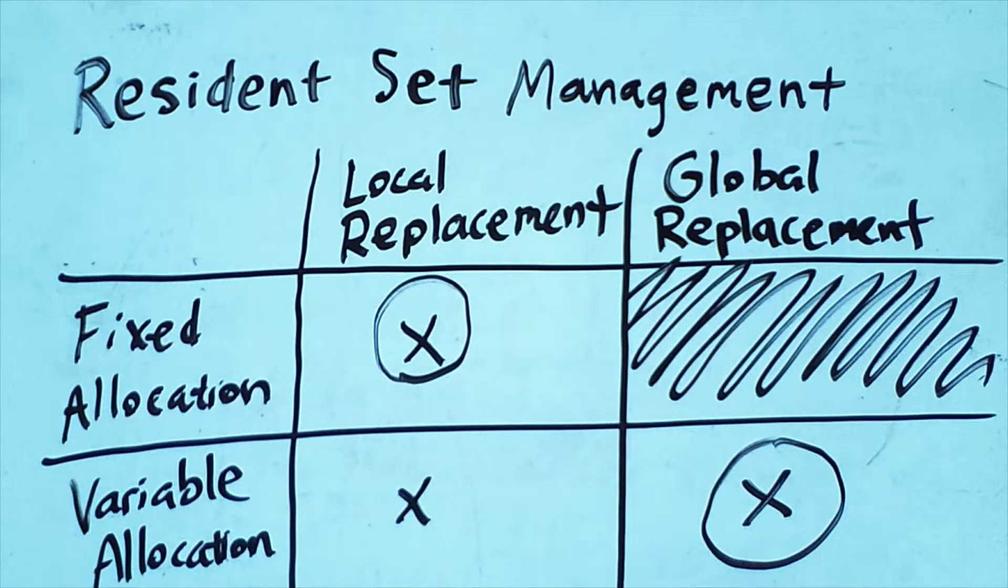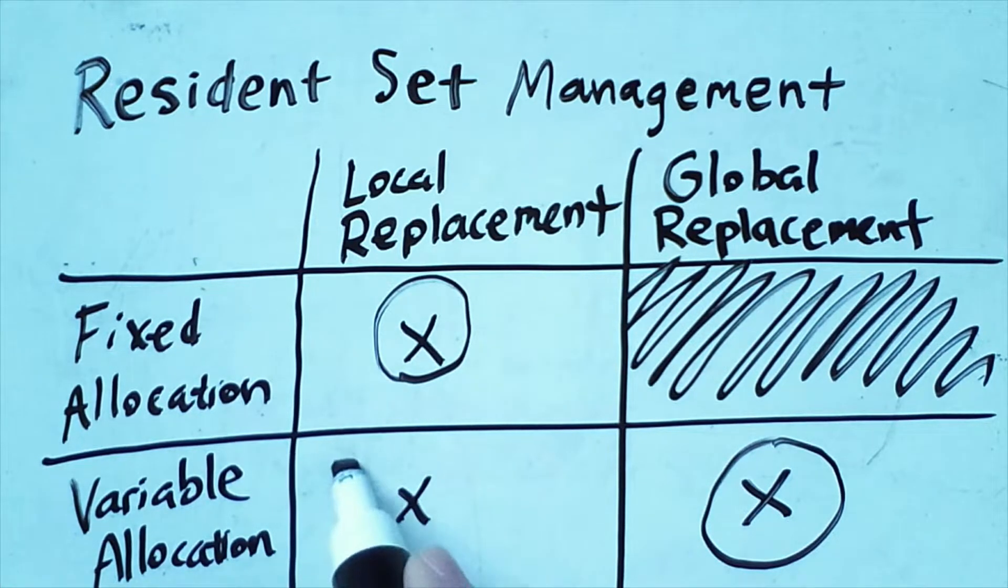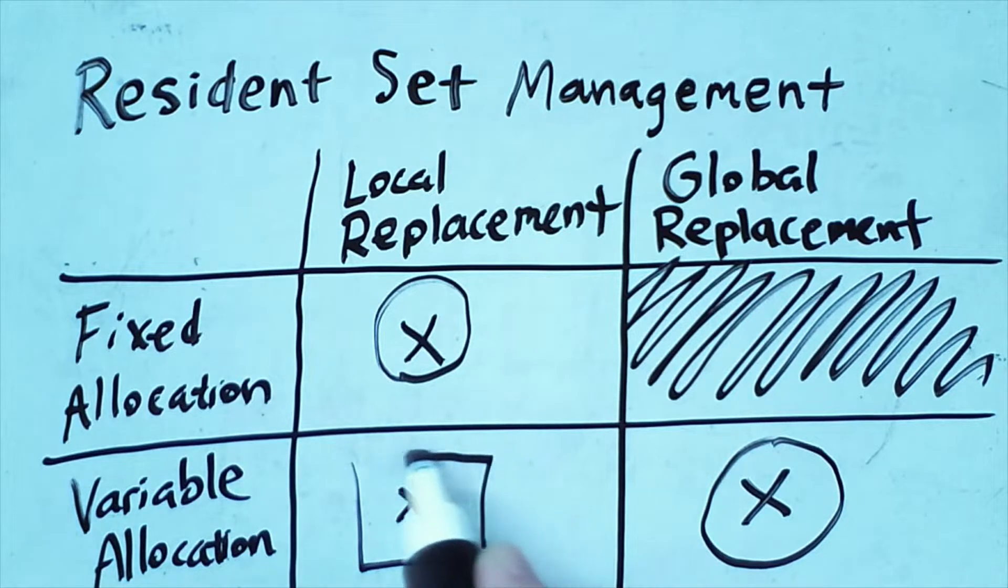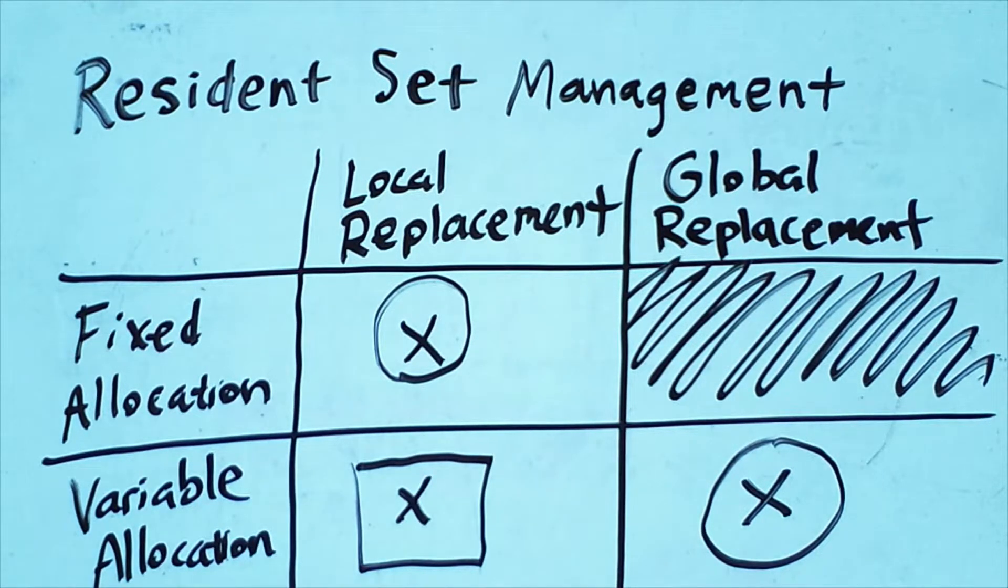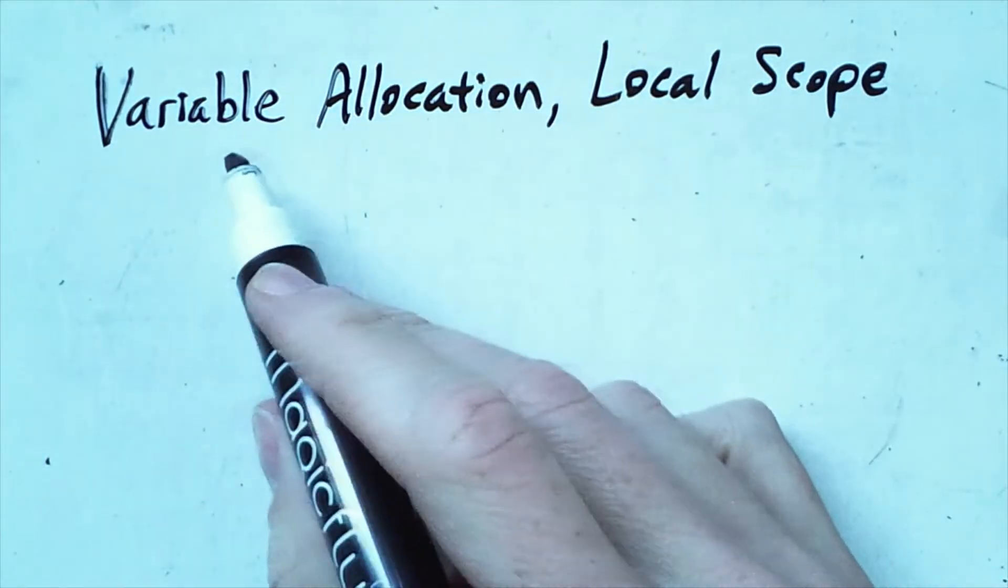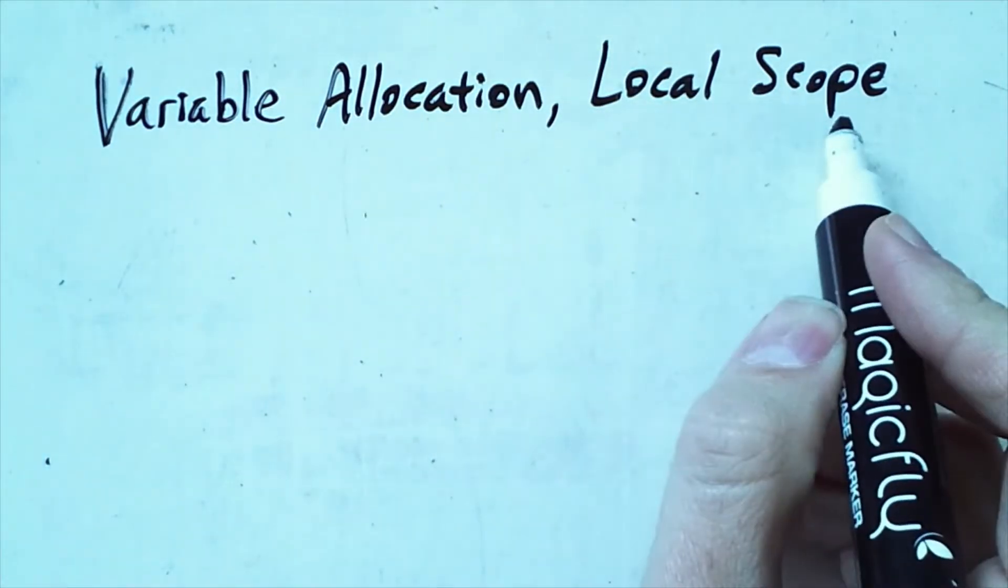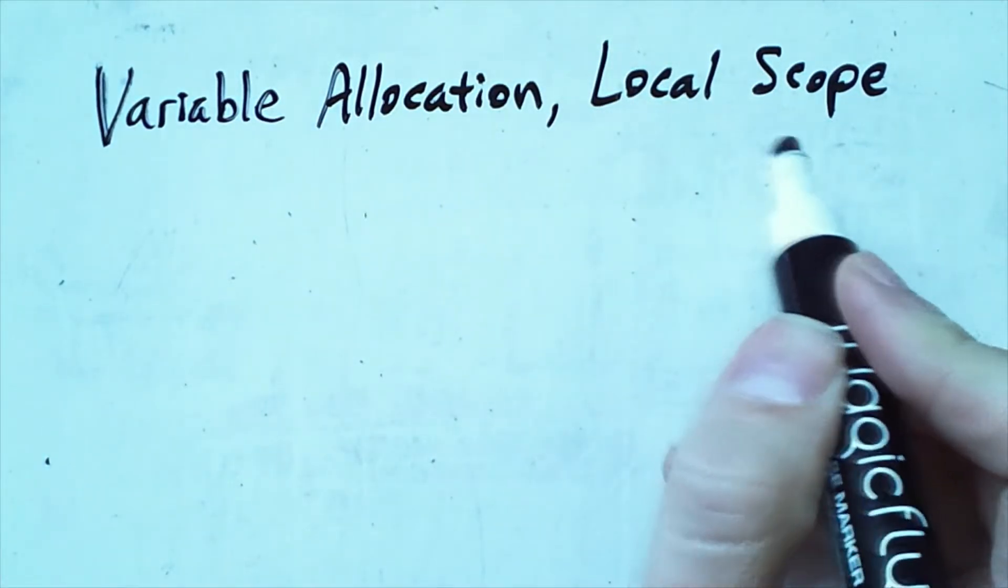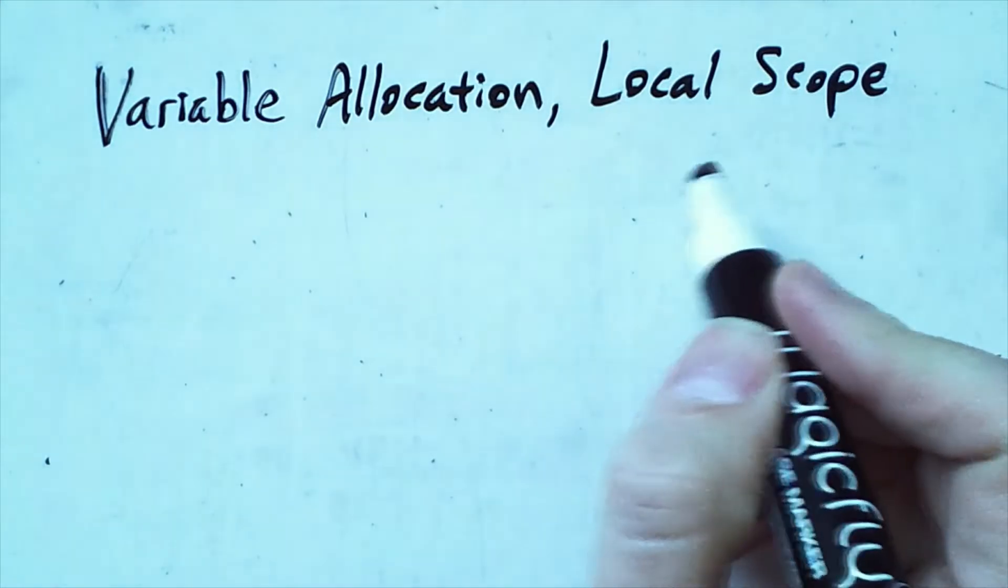And we don't really care which process it came from when picking that frame. The one that is complicated is this variable allocation combined with local replacement, so we'll talk a bit more about this. Variable allocation is more flexible than fixed allocation.